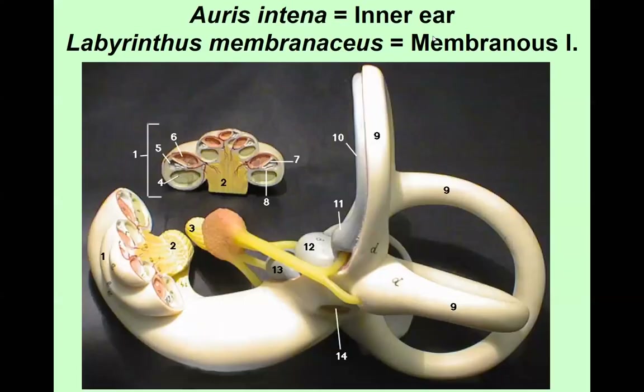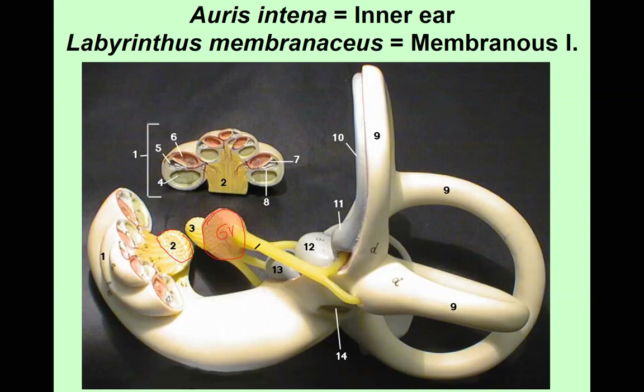A model shows the cochlear nerve running into the cochlea and the vestibular nerve with its ganglion. The vestibular nerve divides into three branches, which will be discussed in a moment.